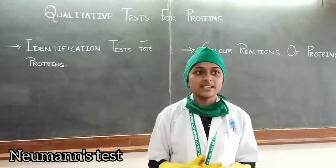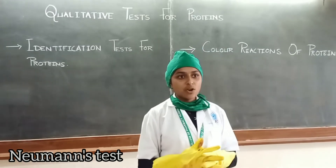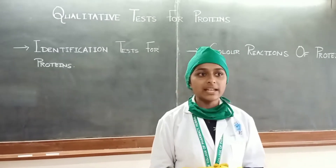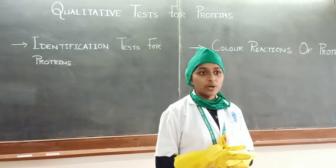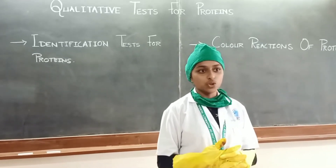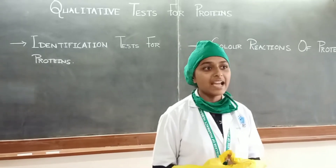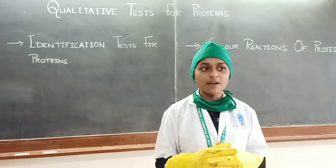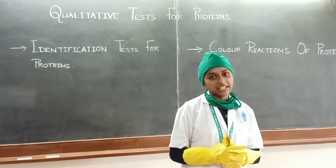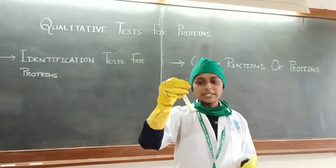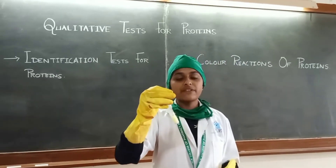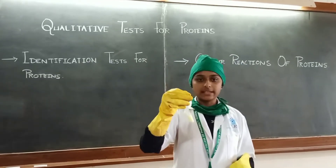Fourth test — Newman's test: 5 ml of sample plus 0.5 ml of NaOH, boil and cool, then add 0.5 ml of concentrated HNO3 and filter. To the filtrate, add a pinch of solid ammonium molybdate and warm gently. No curdy precipitate is observed, indicating the absence of organic phosphorus in casein.